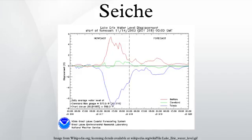Earthquake-generated seiches can be observed thousands of miles away from the epicenter of a quake. Swimming pools are especially prone to seiches caused by earthquakes, as the ground tremors often match the resonant frequencies of small bodies of water. The 1994 Northridge earthquake in California caused swimming pools to overflow across Southern California. The massive Good Friday earthquake that hit Alaska in 1964 caused seiches in swimming pools as far away as Puerto Rico. The earthquake that hit Lisbon, Portugal in 1755 caused seiches 2,000 miles away in Loch Lomond, Loch Long, Loch Katrine and Loch Ness in Scotland, and in canals in Sweden. The 2004 Indian Ocean earthquake caused seiches in standing water bodies in many Indian states as well as in Bangladesh, Nepal and Northern Thailand.